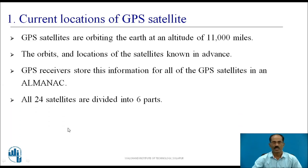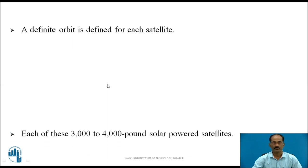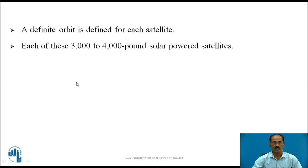All 24 satellites are divided into 6 groups, with 4 satellites in each group. A definite orbit is defined for each satellite. Each of these satellites weighs 3,000 to 4,000 pounds and is solar powered.